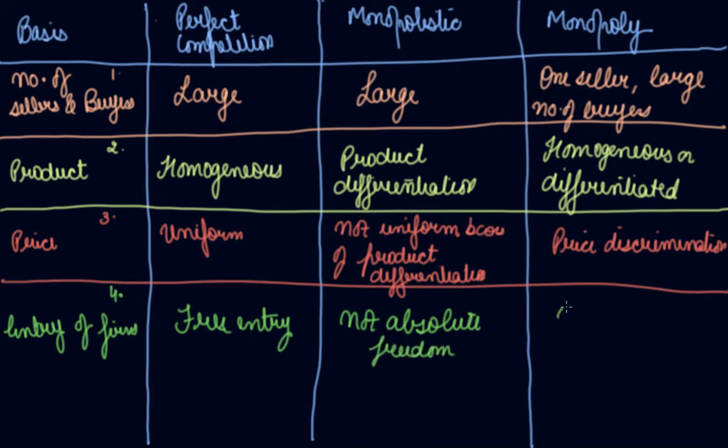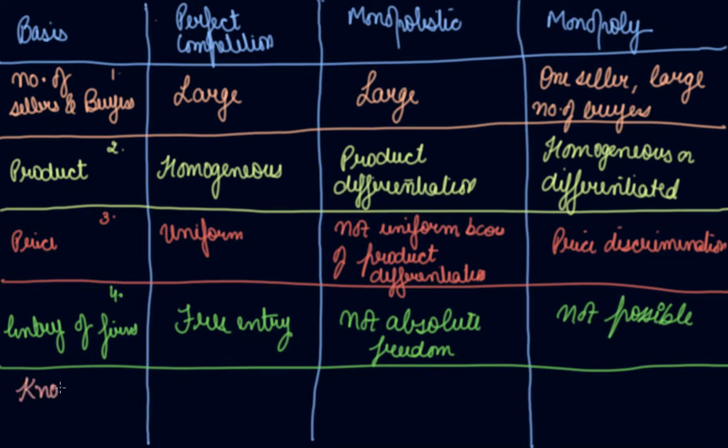Then we have the next one, which is knowledge. Perfect knowledge in perfect competition. Imperfect knowledge in monopolistic competition and again imperfect knowledge in monopoly.